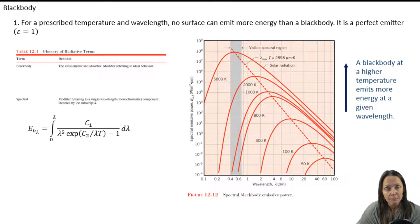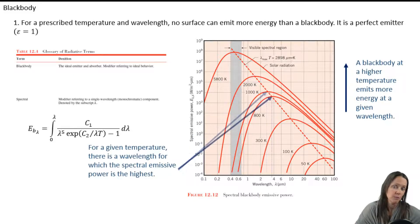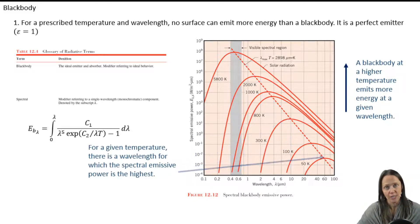First, a black body at a higher temperature emits more energy at a given wavelength. And that makes sense intuitively, right? Second, for a given temperature, there's a wavelength for which that spectral emissive power is the highest.